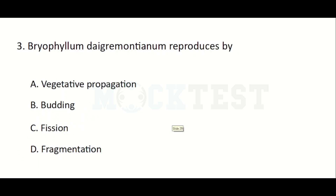Bryophyllum daigremontianum reproduces by — Option A: Vegetative propagation, Option B: Budding, Option C: Fission, Option D: Fragmentation. The answer is Vegetative propagation.